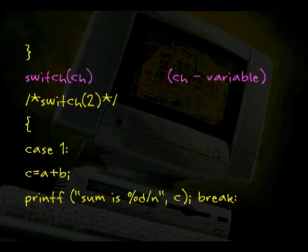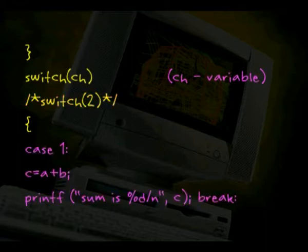Next I move on to the switch block, switch ch. Ch is nothing but the variable or expression which contains either 0 or 1 or 2 or 3. Switch ch is nothing equivalent to switch 2 because I have entered the option 2. I am opening the braces, I have given 2, so the compiler will check the case 1, 1 is not equal to 2, it will skip that block.